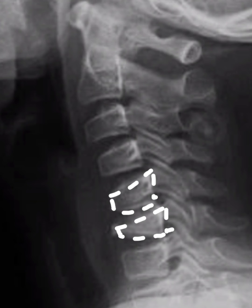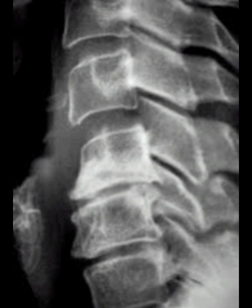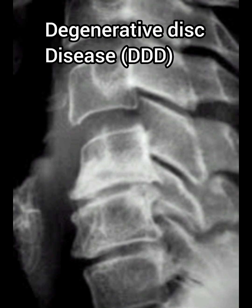The anterior part of C5 and C6 is compressed while the posterior part is normal, giving the shape of a wedge. This is known as a wedge fracture of the vertebral body.